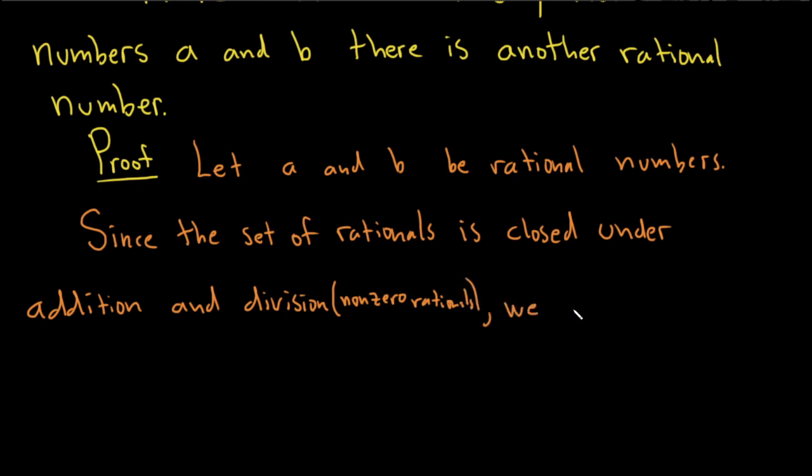We have that the following number is rational: A plus B divided by 2.